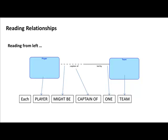'Each player might be captain of one team.' We started with 'each', put the entity type name, saw the line was dashed so said 'might be', took the name of the relationship, ignored the reverse-direction line and name, then looked at the cardinality notation. Since there was no crowfoot, we said 'one' and put the entity type name. The naming convention implies a lot of meaning.